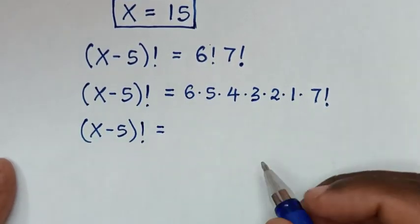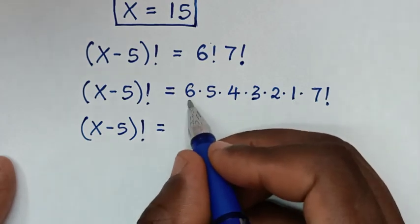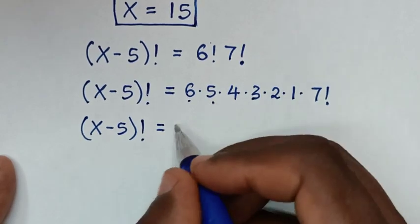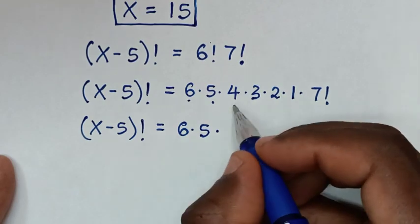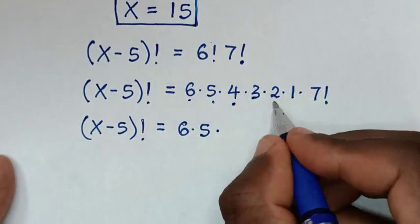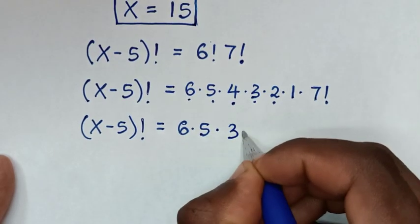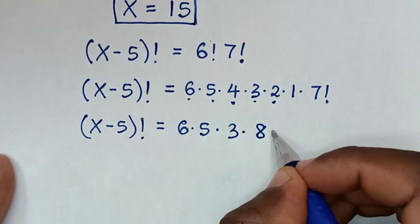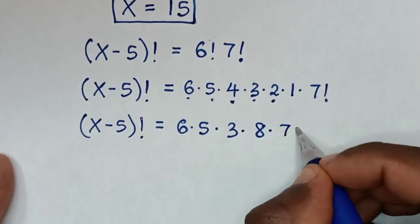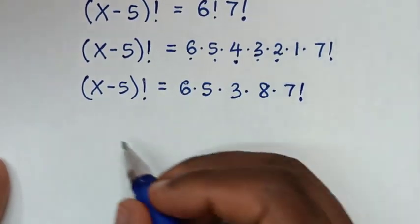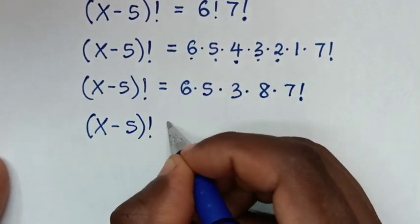In the next step, (x minus 5) factorial is equal to: we take 6 times 5, then from 4 times 2 we get 8, then times 1, then times 7 factorial. So (x minus 5) factorial is equal to 6 times 5 times 8 times 7 factorial.